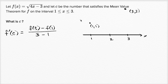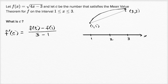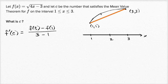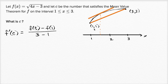So the curve might look something like that. If you think about the slope of the line that connects these two points, all the mean value theorem tells us is that there's a point between 1 and 3 where the slope of the tangent line has the exact same slope. If I were to eyeball it, it looks like it's right around there, although we are actually going to solve for it. So c is that point where the slope of the tangent line equals the slope of the line connecting the two endpoints.